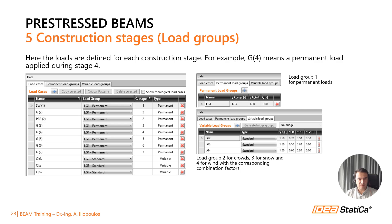After defining the construction stages, it's now time to enter the loads — we skipped this step before because only now it's clear what the numbers in brackets mean. You can see that load cases for construction stages were created automatically, and we can add as many load cases as we want manually. Each load case belongs to a load group, because we need to take into account the correct safety and combination factors. In BEAM, we find load groups for permanent loads and load groups for variable loads.